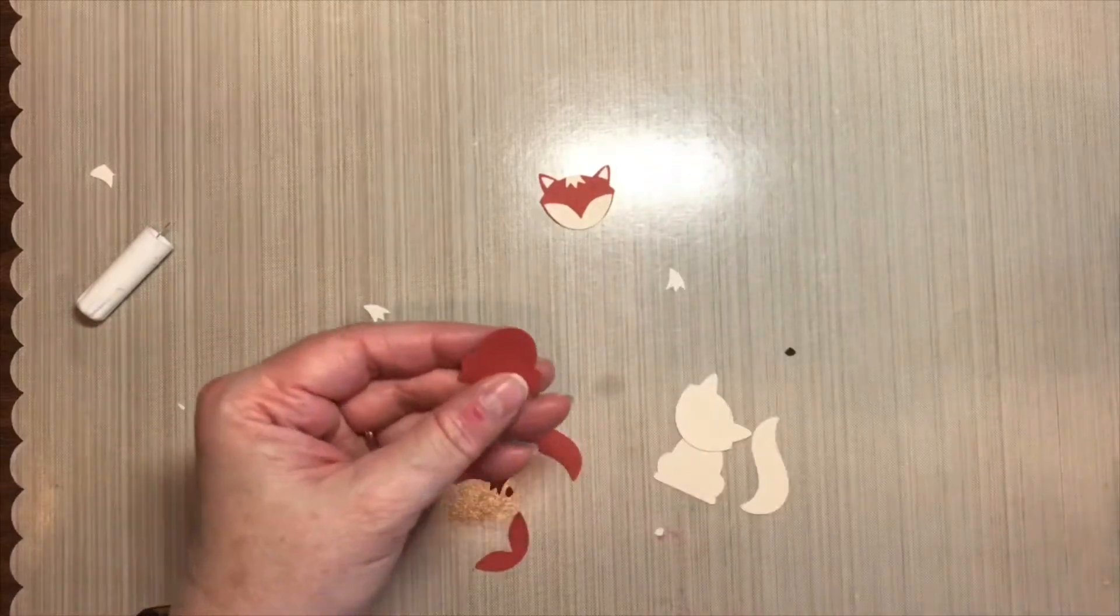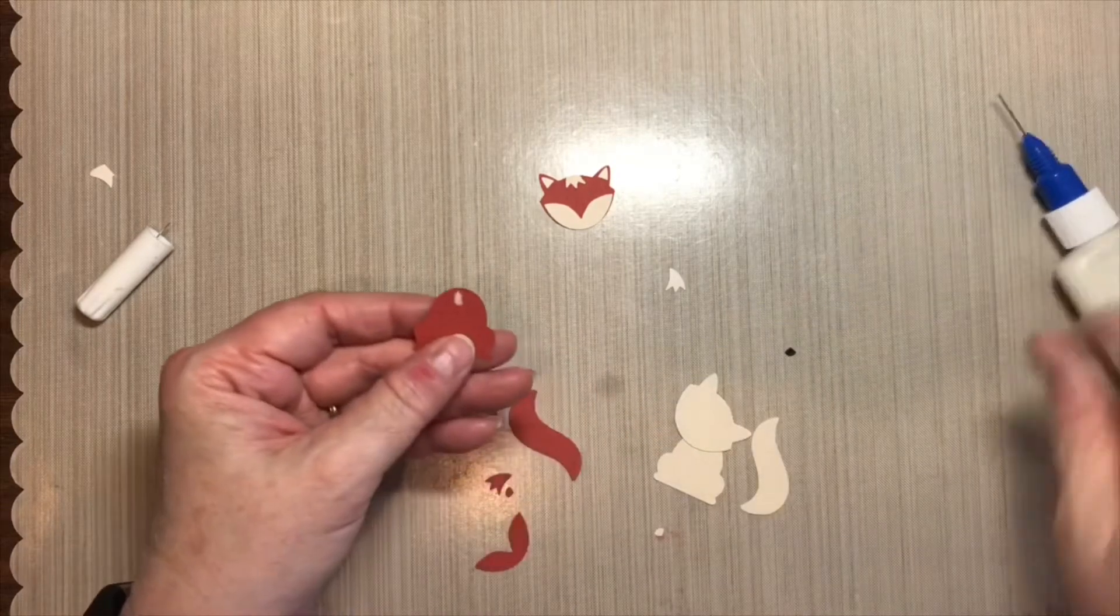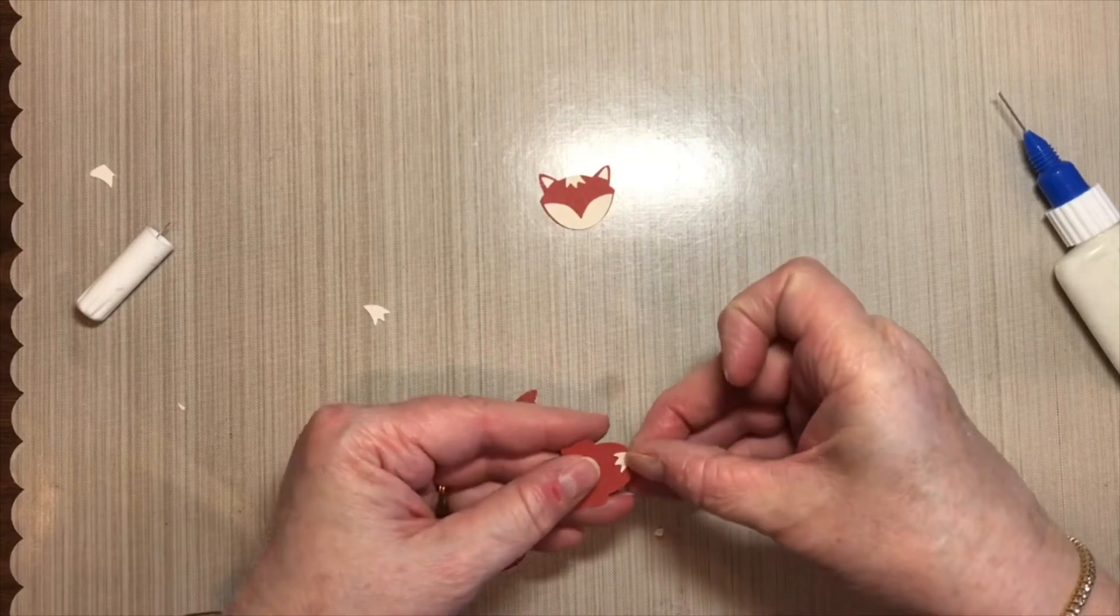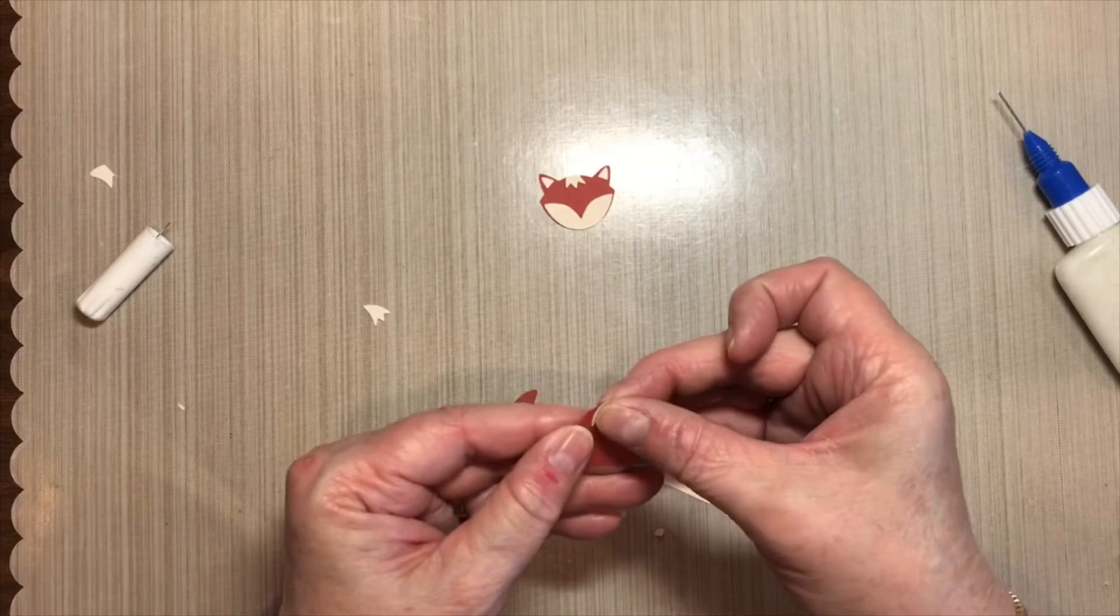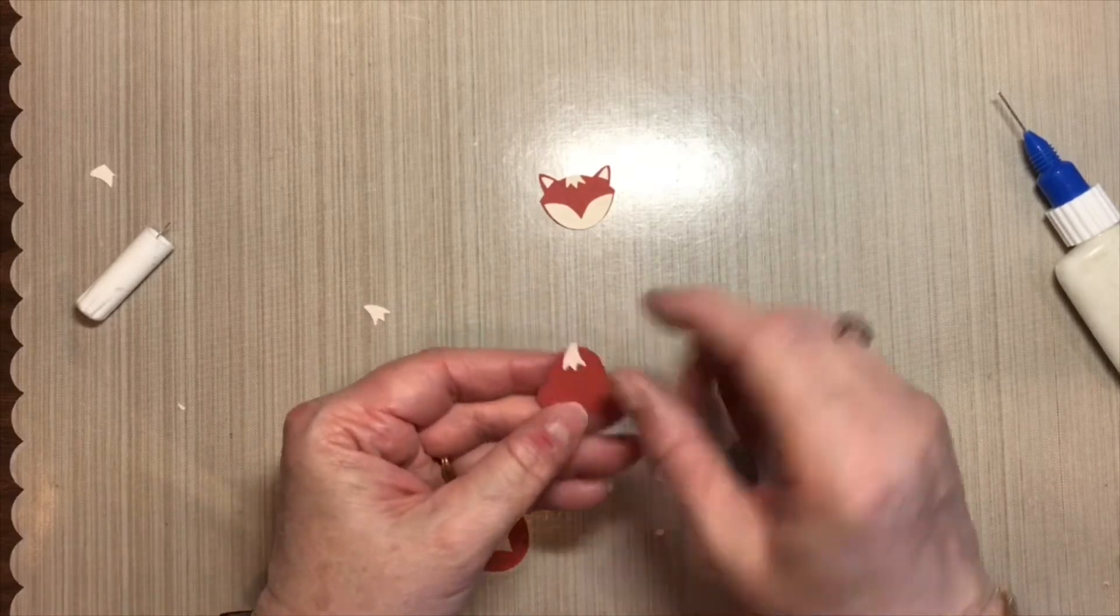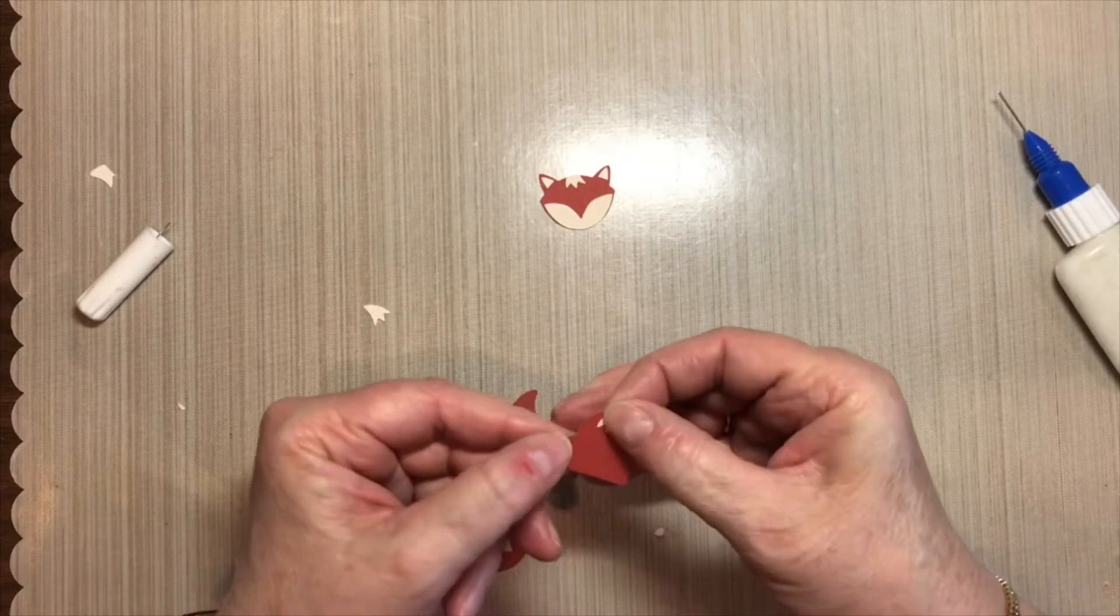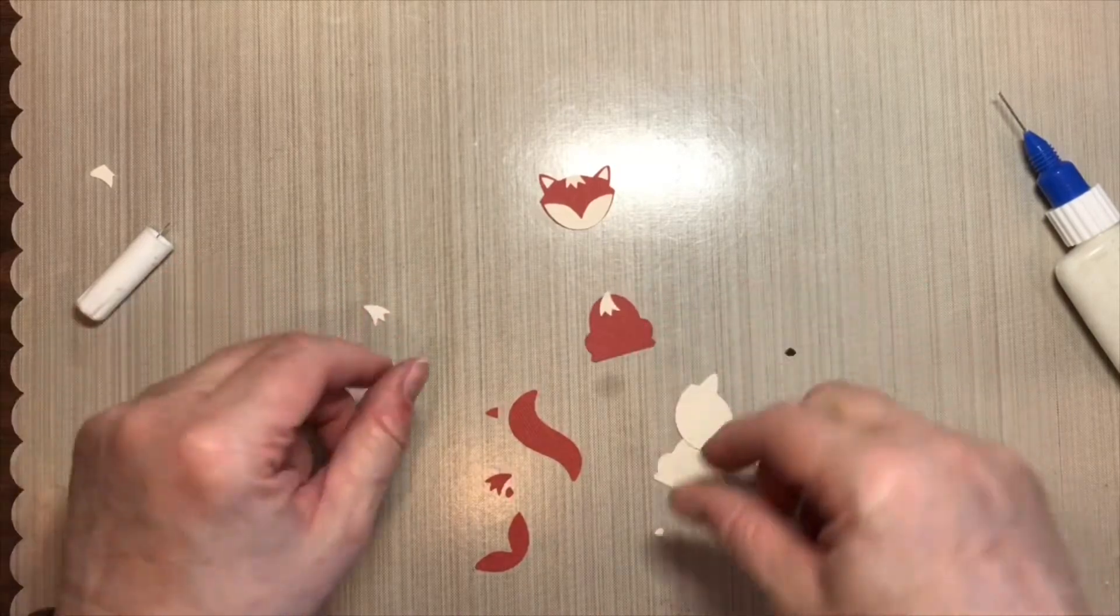Now for his body I want to put another one of those little pieces in, something that will go down below his chin. And since this is going, the top of this will be held hidden behind his head, I'm not even going to bother cutting that off.